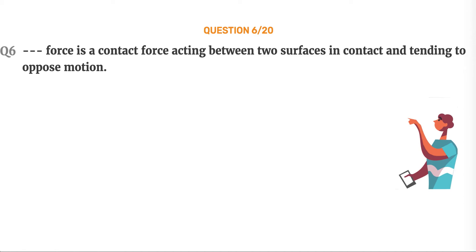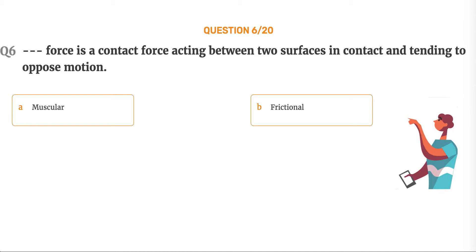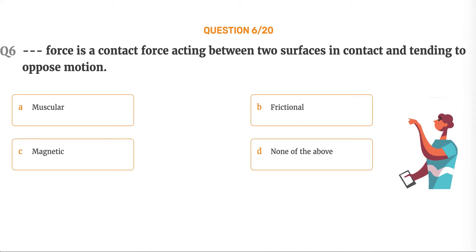Question number 6. Blank force is a contact force acting between two surfaces in contact and tending to oppose motion. Option A: Muscular. Option B: Frictional. Option C: Magnetic. Option D: None of the above.